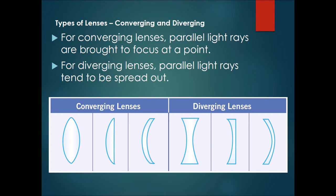For converging lenses, the parallel light rays are brought to focus at a point. If you've ever tried to focus the sun's rays using a magnifying glass, then you have actually seen one of these lenses.